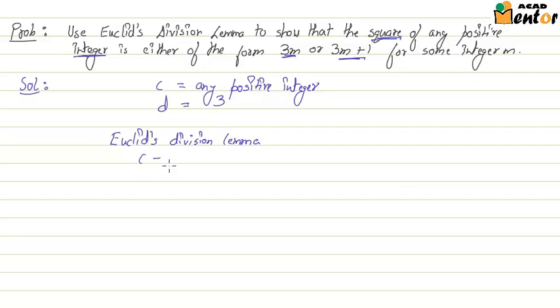c can be expressed as d multiplied by q plus r, where r is greater than or equal to 0 but less than d.